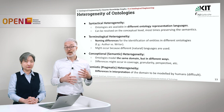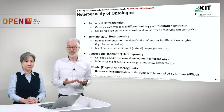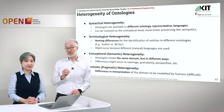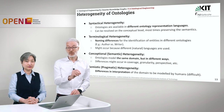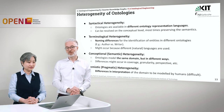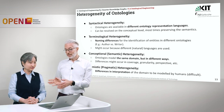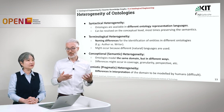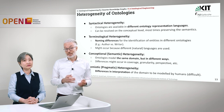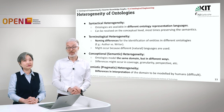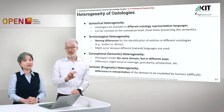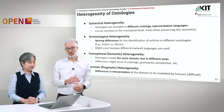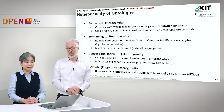The last type is semiotic or pragmatic heterogeneity. This concerns differences in the interpretation of the domain to be modeled by humans, because I might see a specific domain in a completely different way than you do because my intentions are different. This is semiotic heterogeneity, and it is also a rather difficult task to align or map these ontologies with each other.